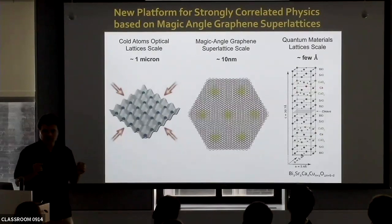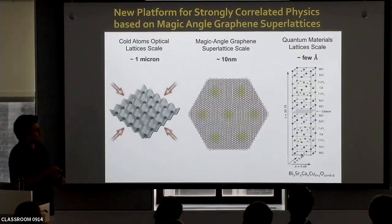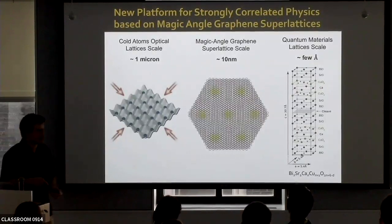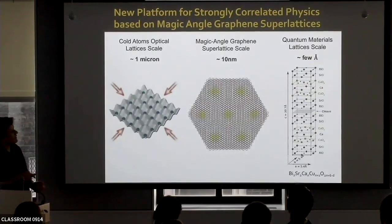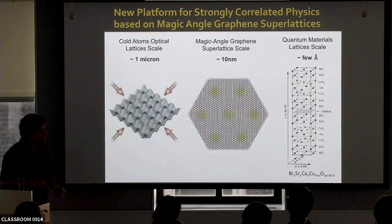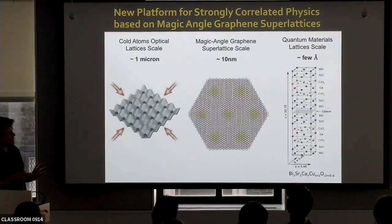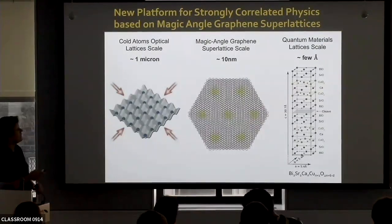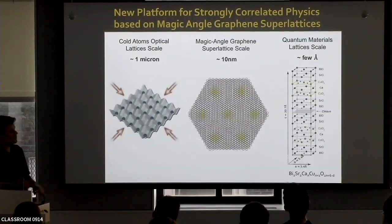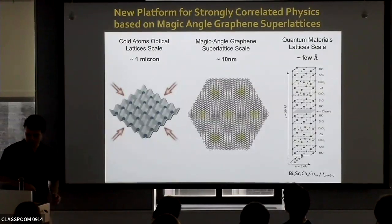Associated with these length scales are energy scales. In quantum materials, the typical energy scales are of the order of 100 or 1,000 Kelvin. In cold atoms it's of order nanokelvin or hundreds of picokelvins. Magic-angle graphene, being intermediate between these two, has corresponding energy scales also intermediate — about 1 to 10 Kelvin. Quantum materials have relatively little control; cold atoms have perfect control; magic-angle graphene has an intermediate degree of control. So it's a complementary platform to investigate correlated physics.